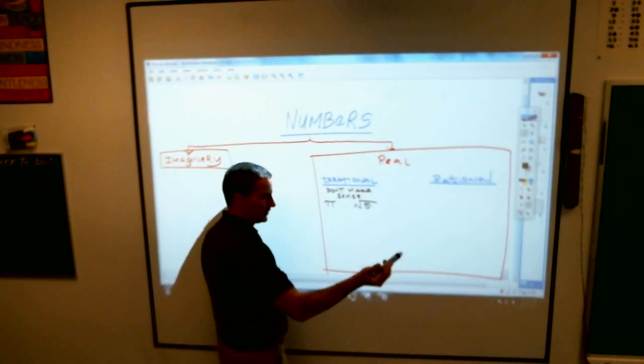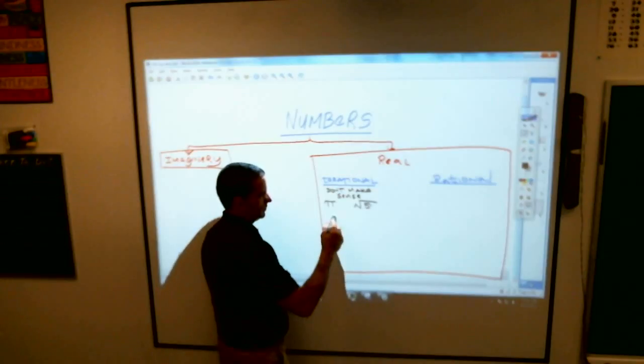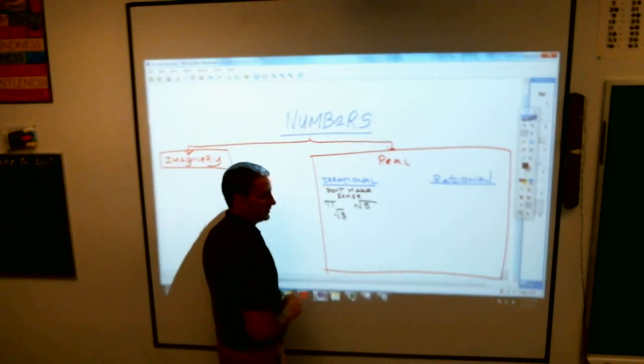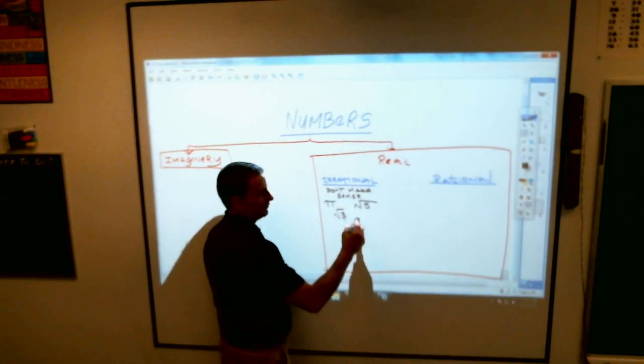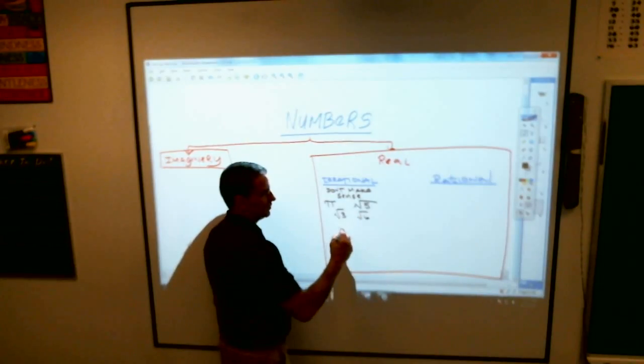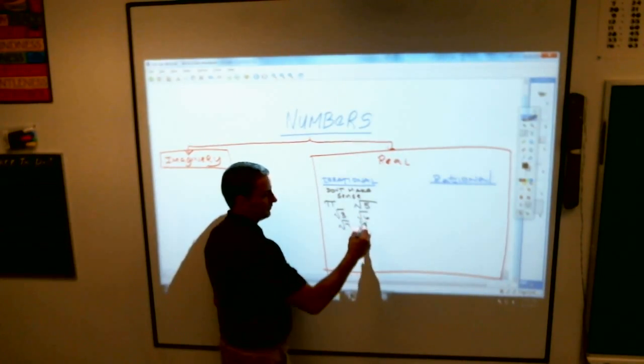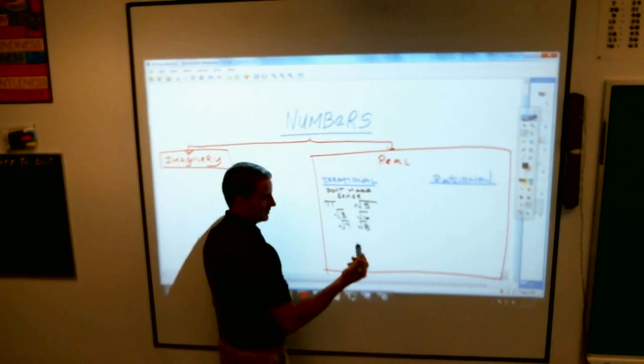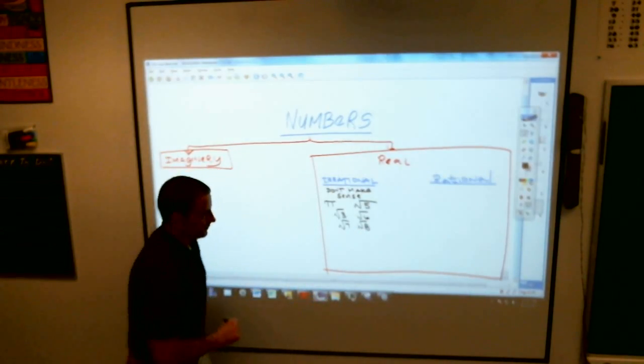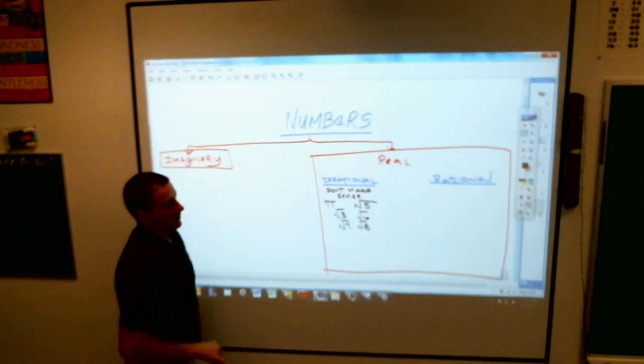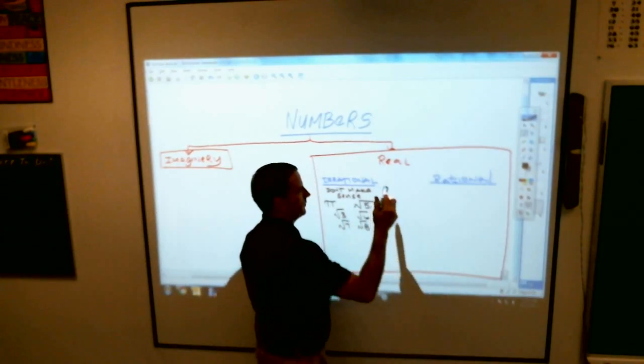So anytime you hear the word irrational, you really for right now just have to think about this: pi and square roots that don't work out. What's another square root that doesn't work out, Jacob? 3. Square root of 3, you can, but it doesn't work out nicely. Square root of 6 doesn't work out, square root of 7, square root of 8 - they can be simplified but they still don't work out. Square root of 9 works out. Square root of 10 doesn't, square root of 11 doesn't work out. So those are irrational and we don't deal a lot with those, but we do deal with them a little bit.